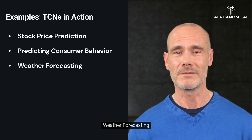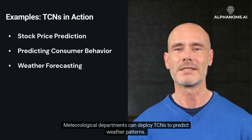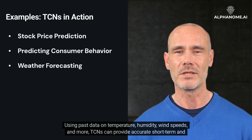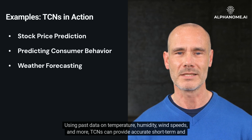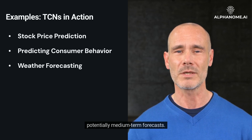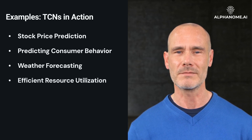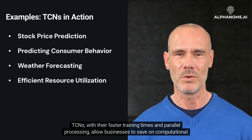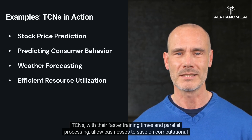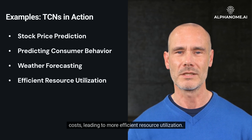Weather Forecasting: meteorological departments can deploy TCNs to predict weather patterns. Using past data on temperature, humidity, wind speeds, and more, TCNs can provide accurate short-term and potentially medium-term forecasts. Efficient Resource Utilization: TCNs, with their faster training times and parallel processing, allow businesses to save on computational costs, leading to more efficient resource utilization.